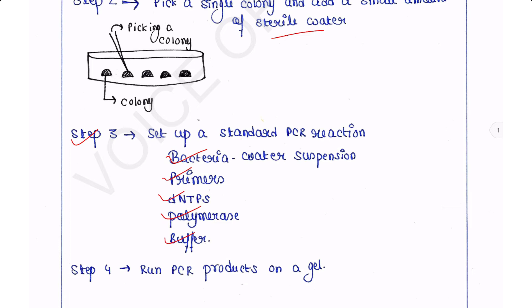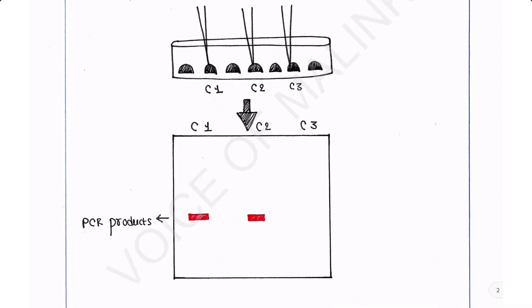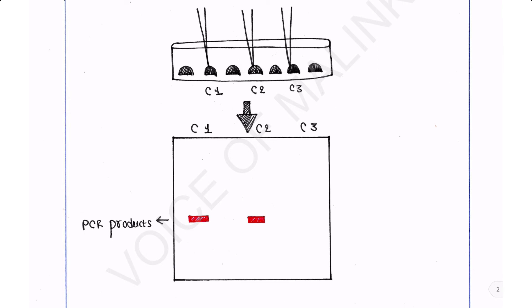Step 4: Run PCR products on a gel. So this is the data analysis. Here we have taken three colonies: colony 1, colony 2, and colony 3, and then run the PCR. Only two of them are positive clones because we can see the bands of their PCR products in the gel.